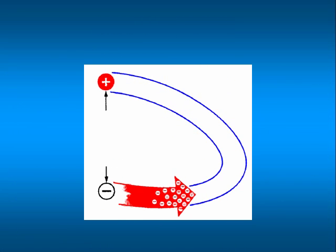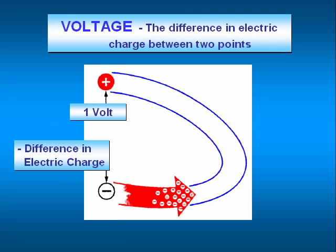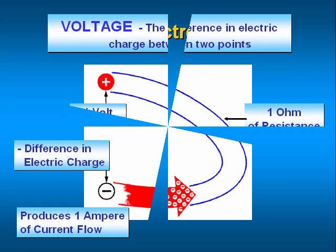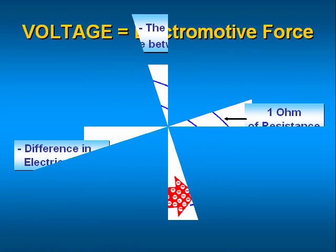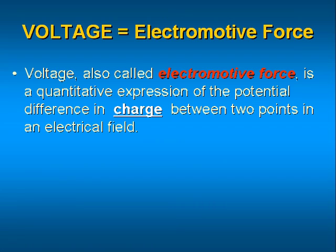Voltage is the difference in charge between two points. One volt has been defined as the amount of charge difference that will produce a one-amp current through a resistance of one ohm. Voltage is also called electromotive force.